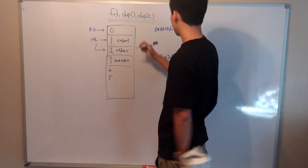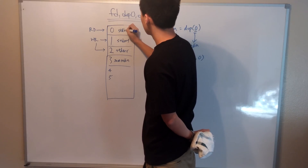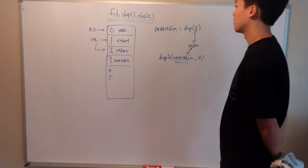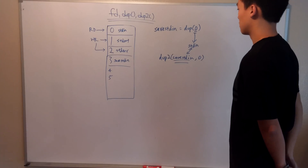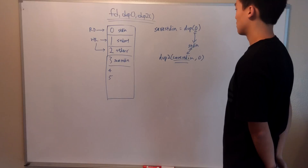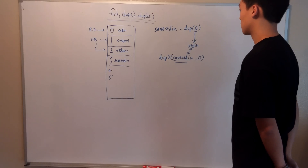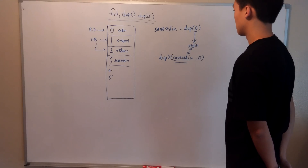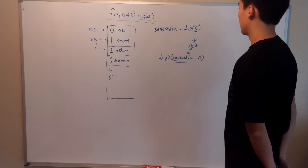At this point, we have successfully used dup to change slot 0 to the file descriptor of our file, effectively replacing standard in from the terminal with standard in with our file. After using our file as input, we then used dup2 to restore standard in to default standard in from the terminal. Alright guys, that was a lot of standard in, but I think you guys should have got it. And that's a wrap.